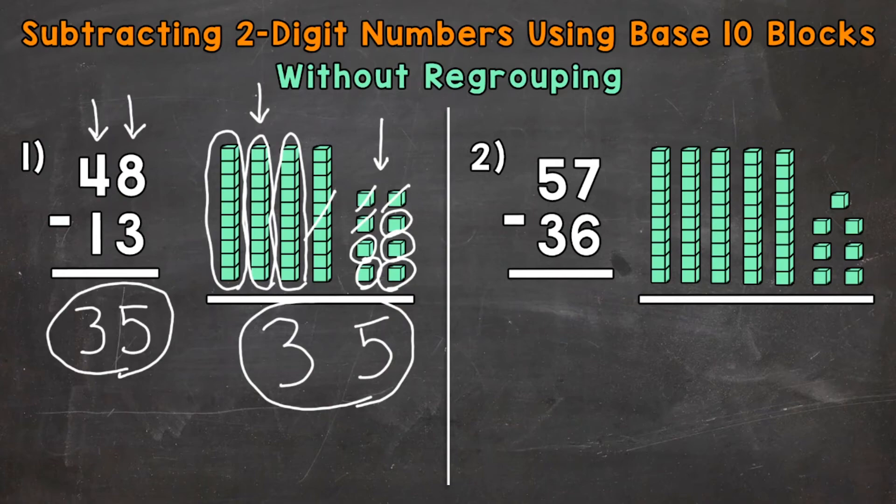Let's move on to number 2 where we have 57 minus 36. We have 57 represented by the base 10 blocks to the right. 57 has a 5 in the tens place, so 5 tens right here. And then a 7 in the ones, so we have 7 ones right here.